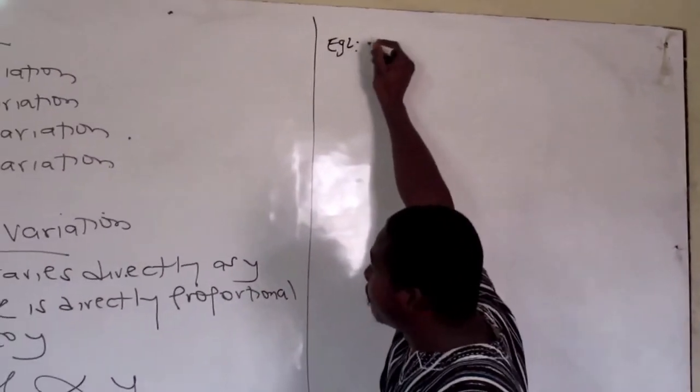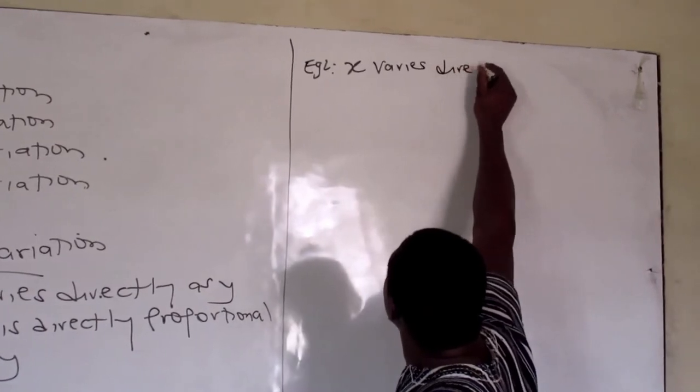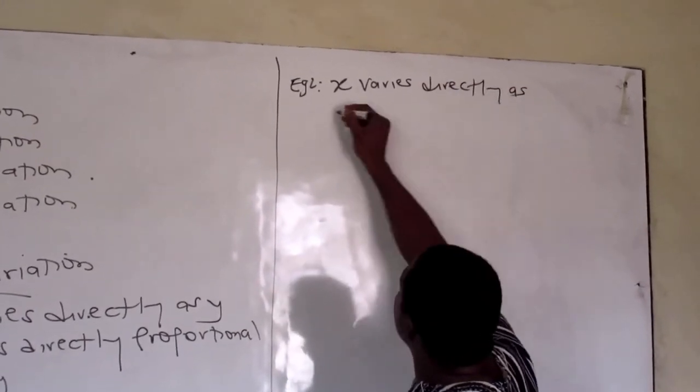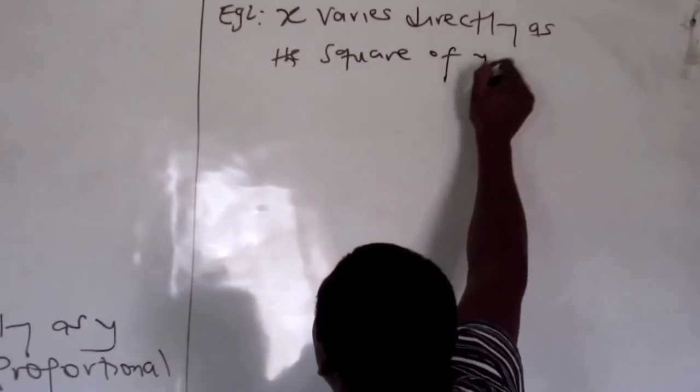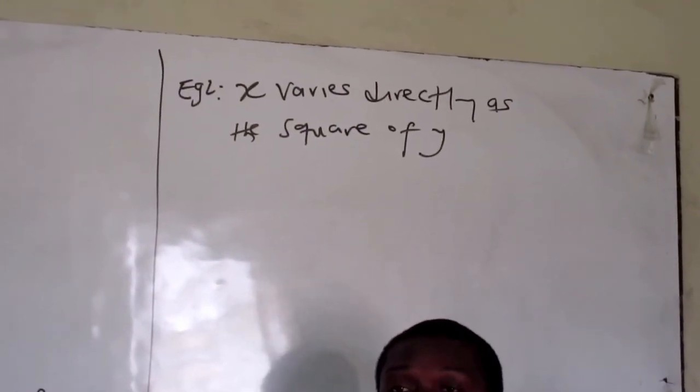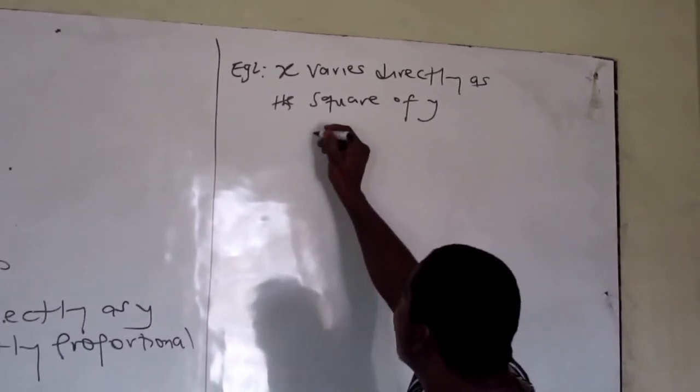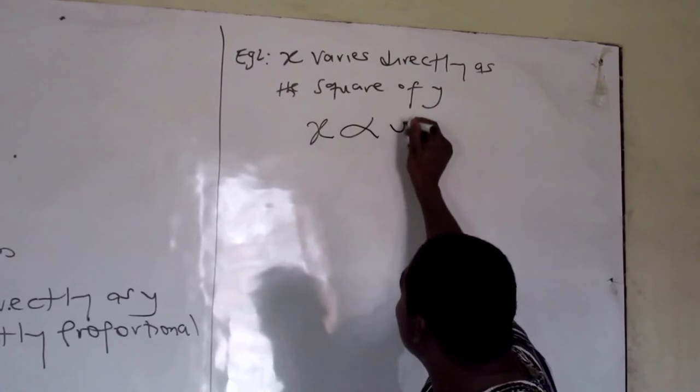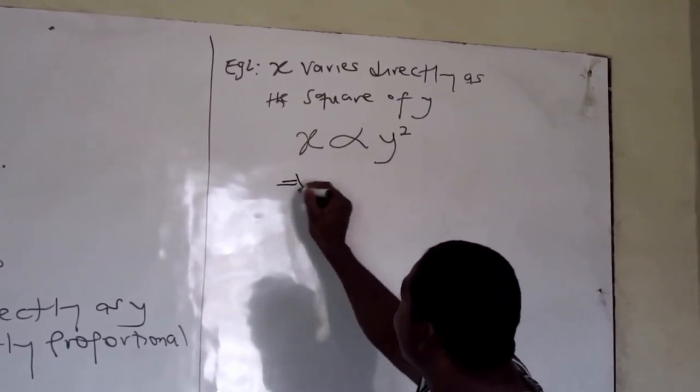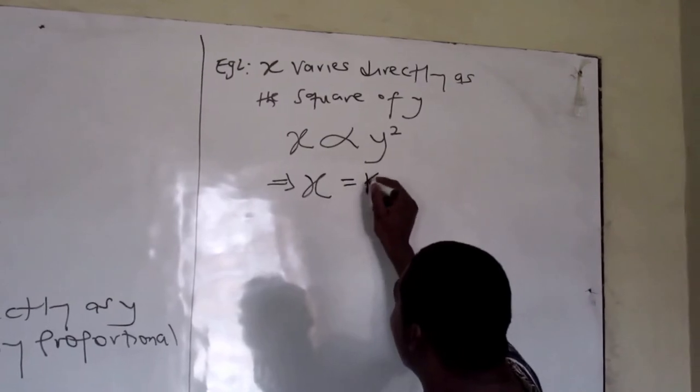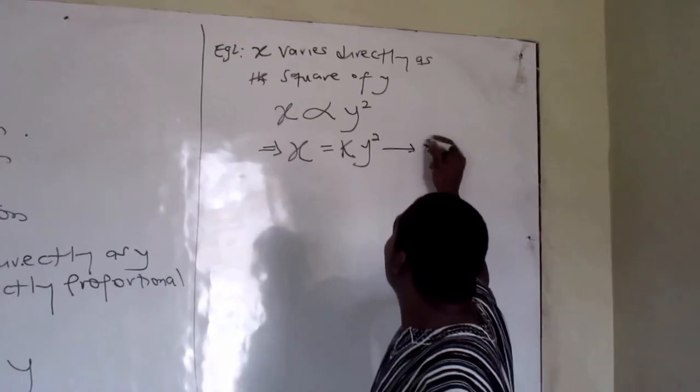So take note. Good, we can also see another example. Second example: x varies directly as the square of y. X varies directly as the square of y. So let's quantify this. So implication: it means we have x equals the constant and another quantity, y squared. So we can call this equation whatever.